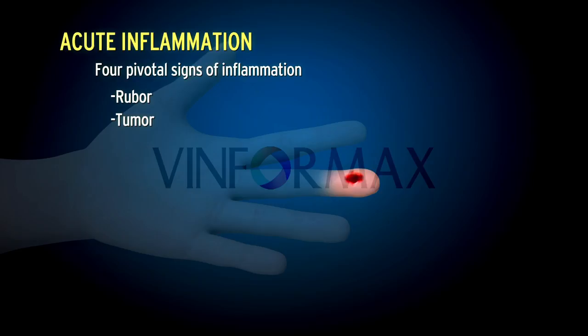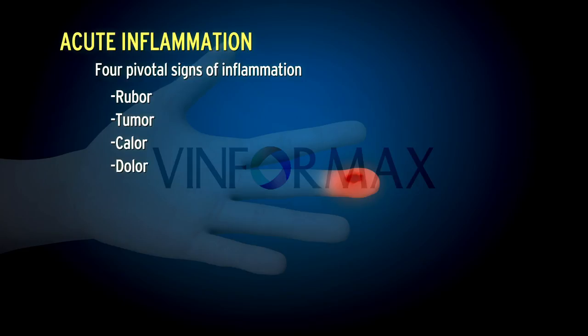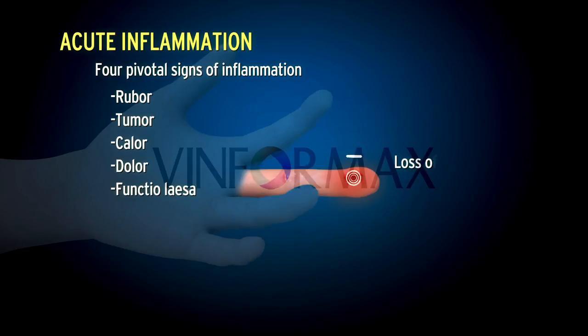The four pivotal signs of inflammation are: rubor — redness; tumor — swelling; calor — heat; dolor — pain; and functio laesa — loss of function.